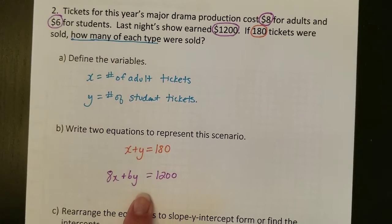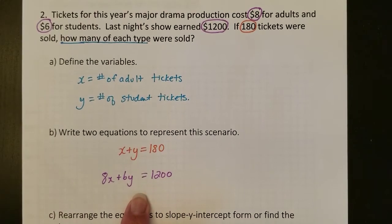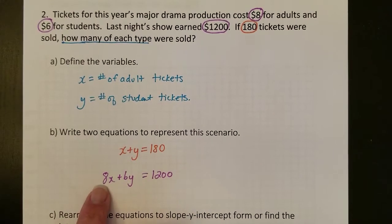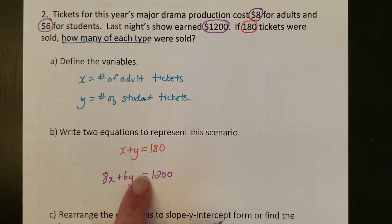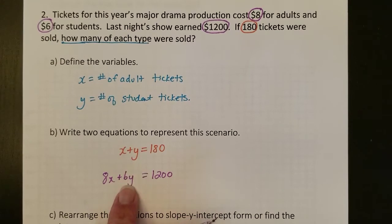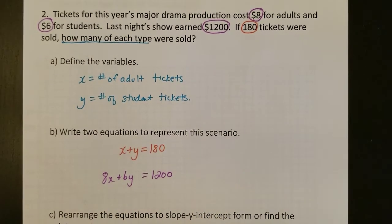Then I've created another equation using money. So here, each adult ticket cost $8. So if you wanted the total amount of adult ticket money, you'd take $8 times the number of adult tickets. And then each student ticket, which was Y, cost $6. However many student tickets you sold, you'll multiply that by 6, and that's an amount of money. If you add up the money from the adult tickets and the money from the student tickets, you get the total amount of money, that $1,200.